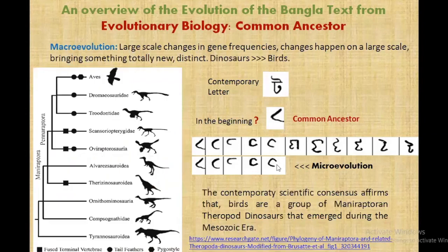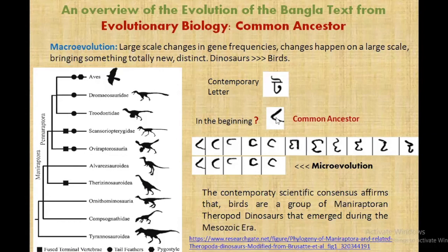There is another type: macroevolution — large scale changes in gene frequencies. You can just remember it as changes happening on a large scale, bringing something totally new and distinct. Like we can talk about how dinosaurs evolved into modern diverse birds.